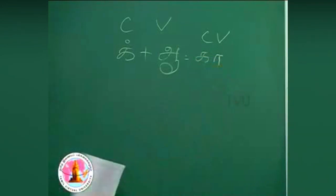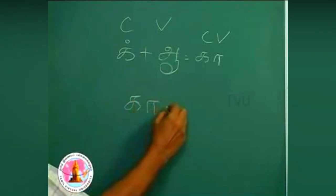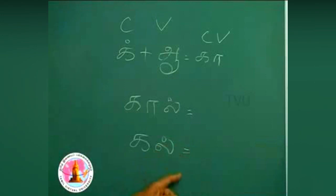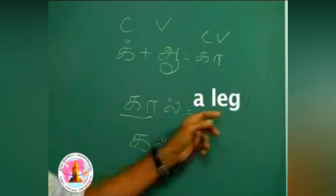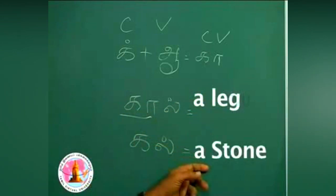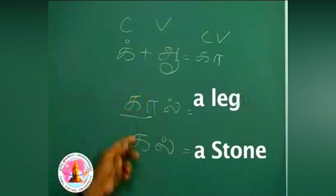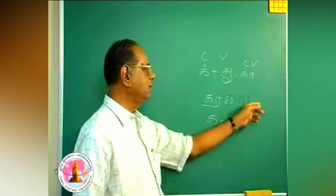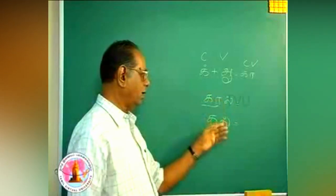With this combination also we saw a few words. For instance, kāl. Kāl is a leg. This is ka and il. This means a leg and this means a stone. So the elongation of the consonantal vowel brings in a difference in the meaning. Kāl and kal.